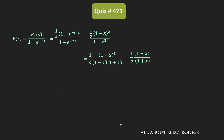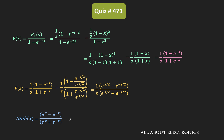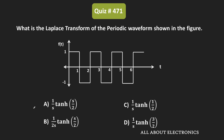Substituting back x = e^(-s), we get (1/s)(1 - e^(-s)) / (1 + e^(-s)). Now e^(-s) can be written as e^(-s/2) / e^(s/2). Multiplying both numerator and denominator by e^(s/2), we get (1/s)(e^(s/2) - e^(-s/2)) / (e^(s/2) + e^(-s/2)), which matches the definition of tanh(x) with x = s/2. Therefore, the Laplace transform of this periodic waveform is (1/s) tanh(s/2), and so option A is the correct answer.